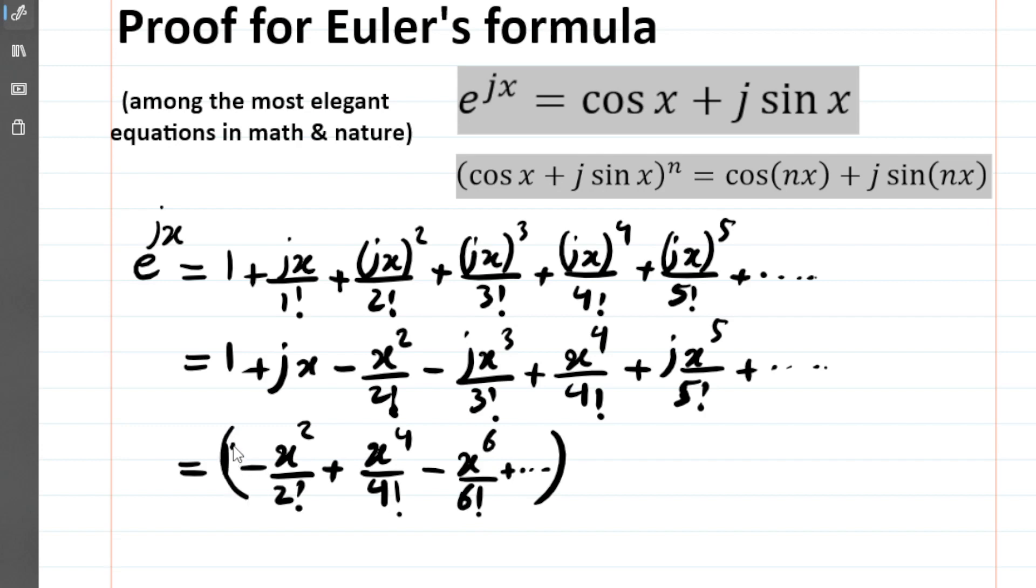For the imaginary part, let's factor out j. The rest of the imaginary part is: x - x^3/3! + x^5/5! - x^7/7! + ..., and this goes on forever.